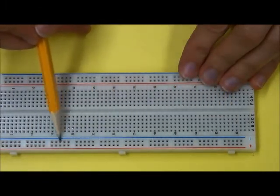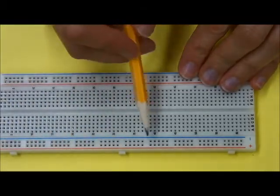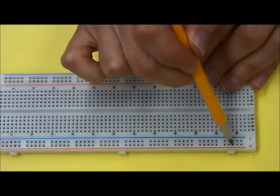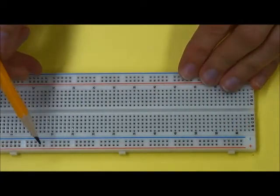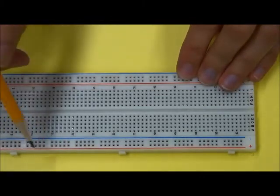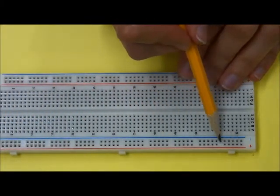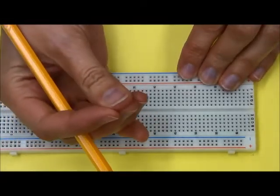And same thing where the blue stripe is, they are all connected in one long row, but not in this direction. So if I were to connect a component to a hole on this end of the board and then connect another component to a hole on the opposite end, those two pieces would now be connected. Because underneath is actually a strip of metal with little clips that can grab onto any component that you place in there.